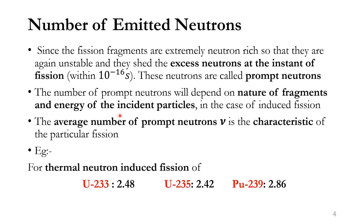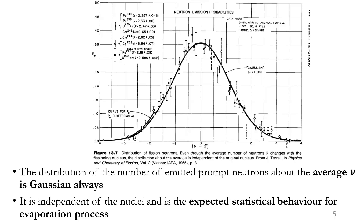The number of prompt neutrons depends on the nature of the fragments produced and the energy of the incident particles in induced fission. In spontaneous fission it depends only on the natural fragments, not on the incident nucleus. In induced fission it depends on both the fragments and the energy of the incident particles. The average number of prompt neutrons, represented by ν, is a characteristic of the particular fission.